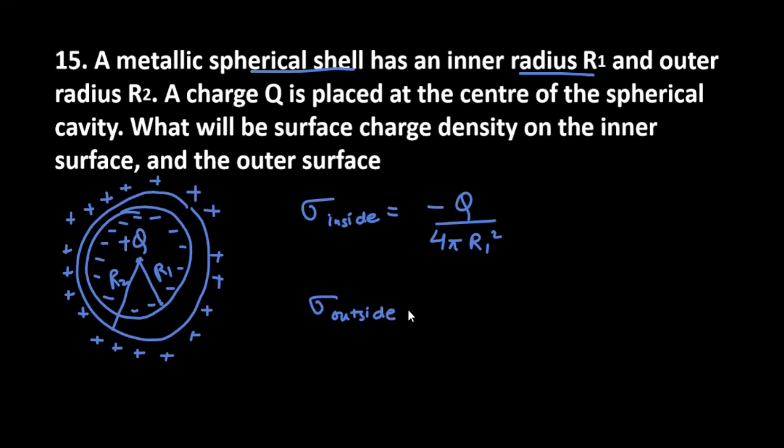So the outer surface charge density is plus Q over 4π R2 squared. Therefore R2 squared here. That's it, this is the solution for question number 15.